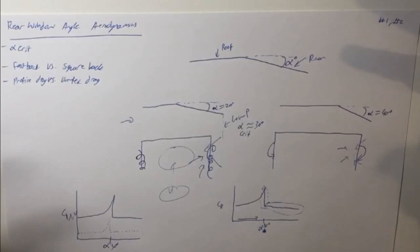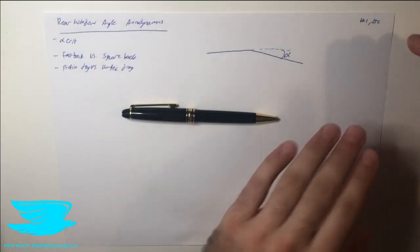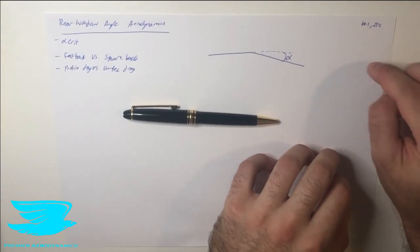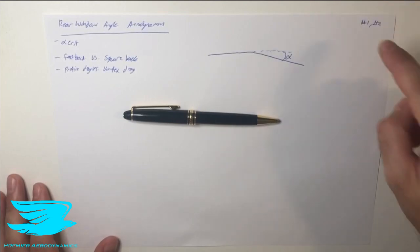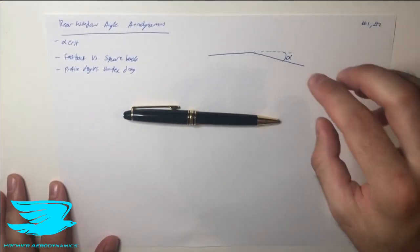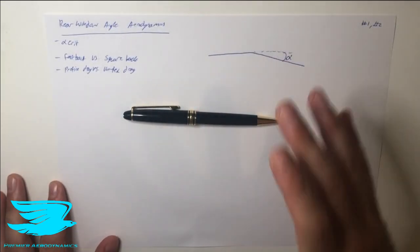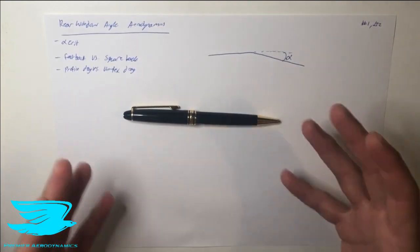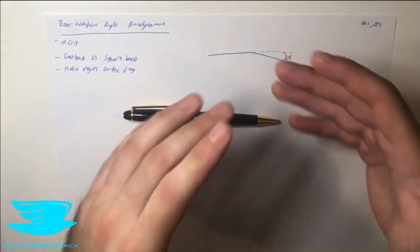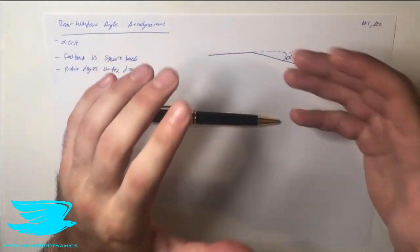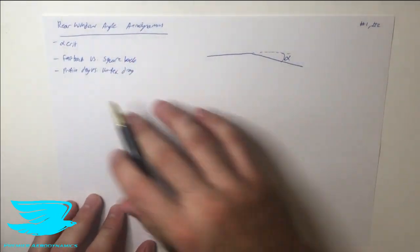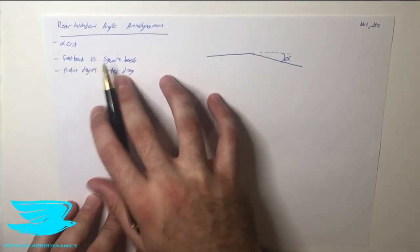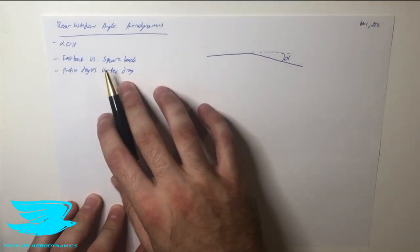Today we're looking at rear window angle aerodynamics, which ties into videos one and two in this series on automotive aerodynamics. In this video we'll go through a much more detailed view of the aerodynamics when the rear window angle changes. We'll cover something called the critical angle, the difference between fastbacks and square backs, and profile drag versus vortex drag.